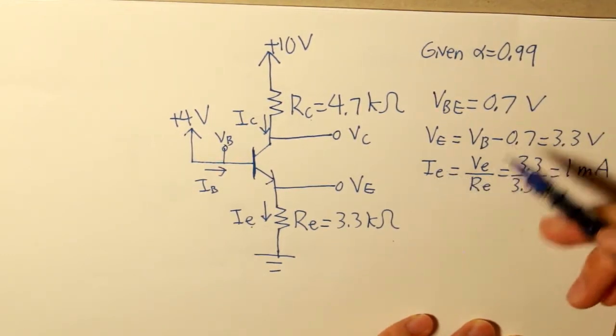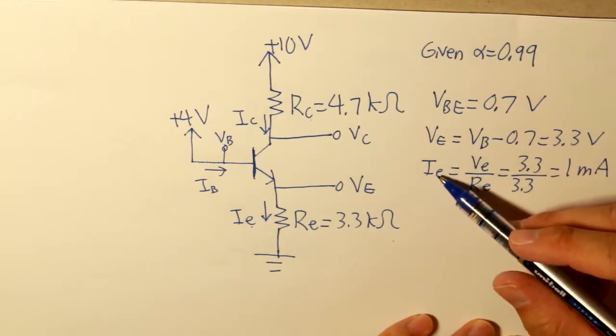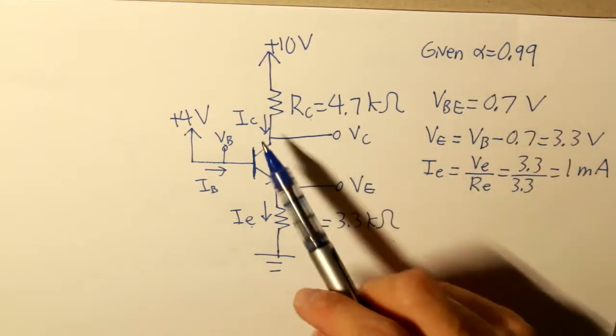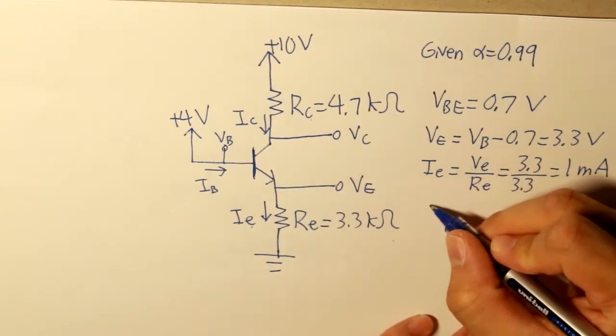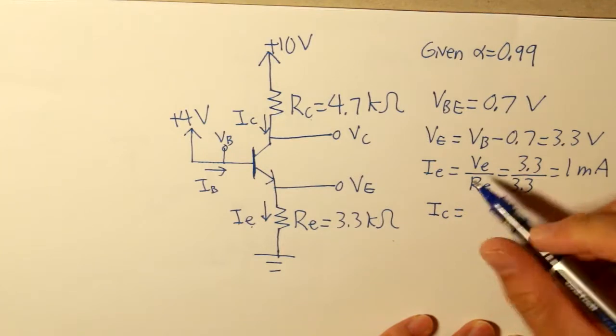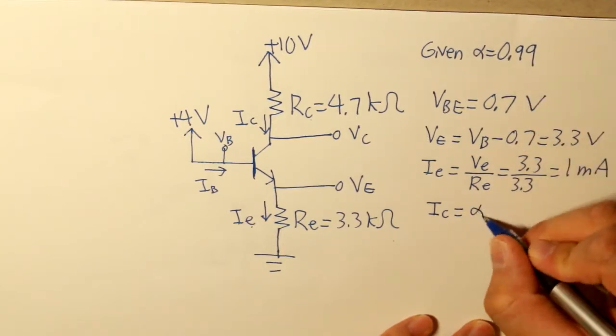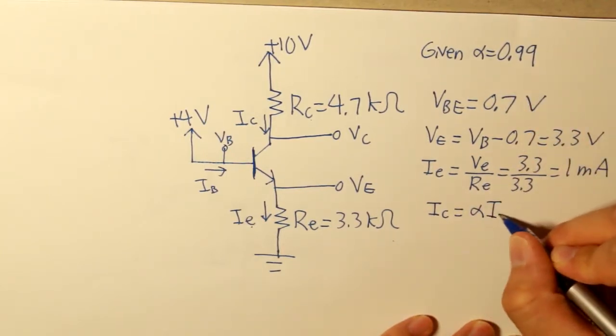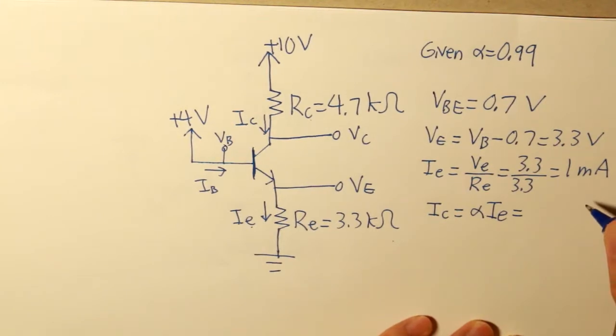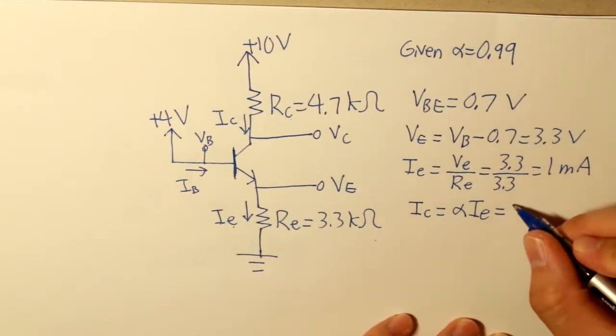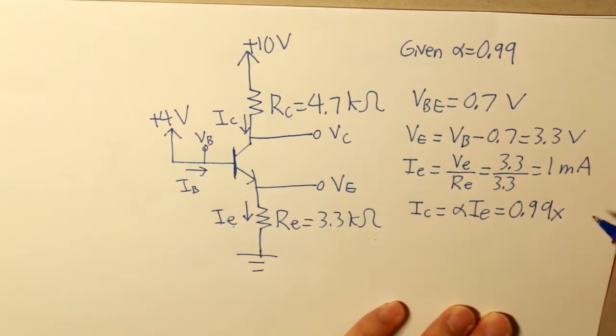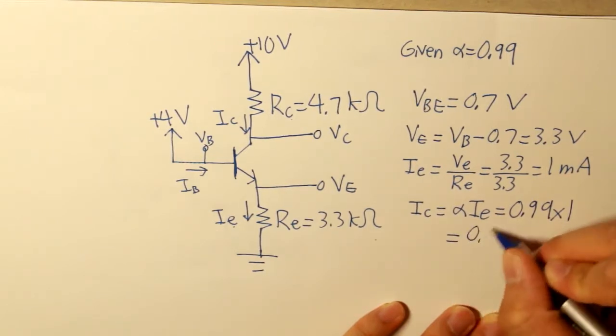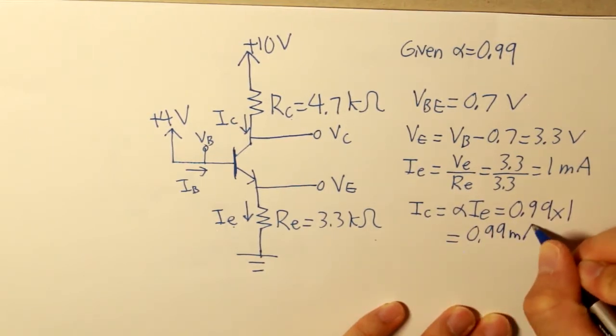Now since we're given our value for our emitter current, we can basically find our collector current, because given this alpha value, we can multiply it by the emitter current, and what we now get is 0.99 multiplied by 1, and what we get is 0.99 milliamps.